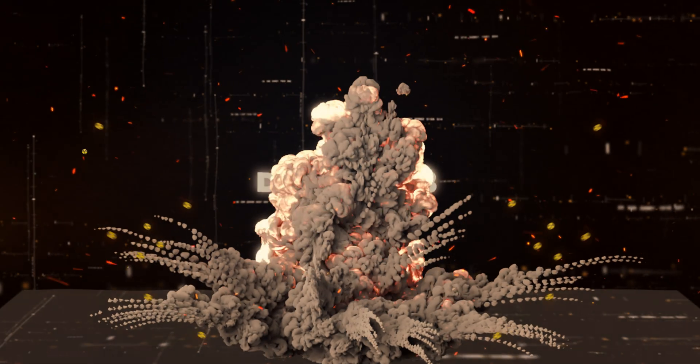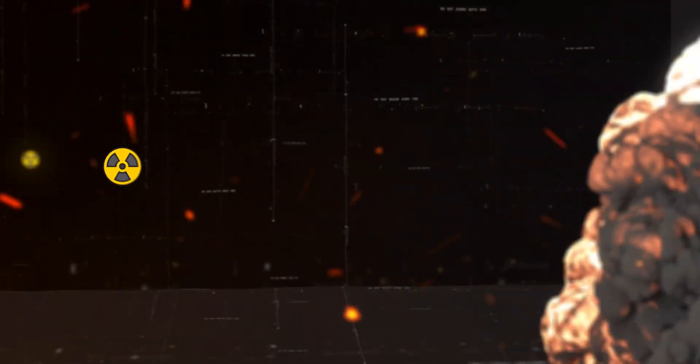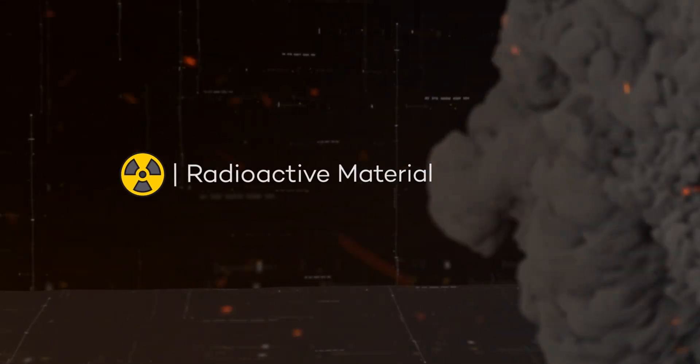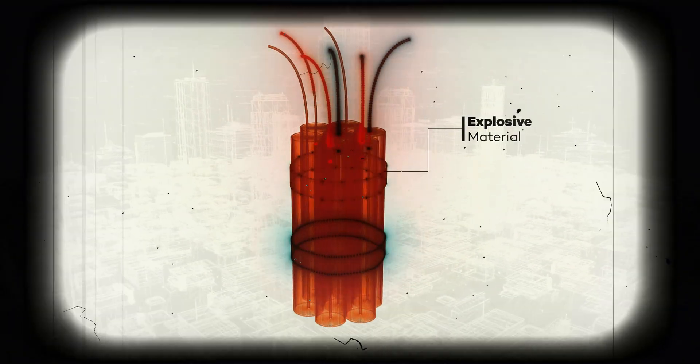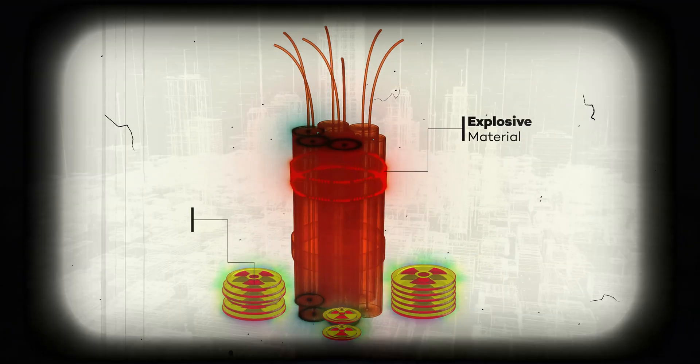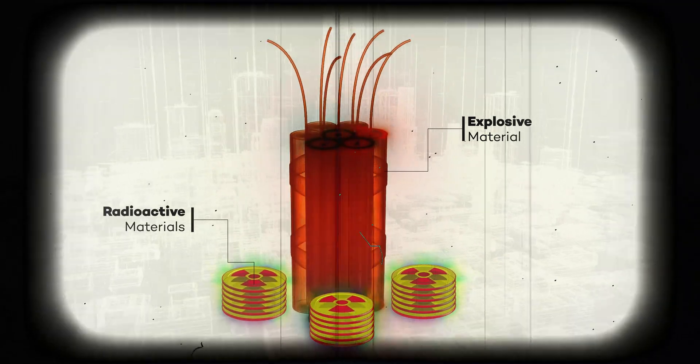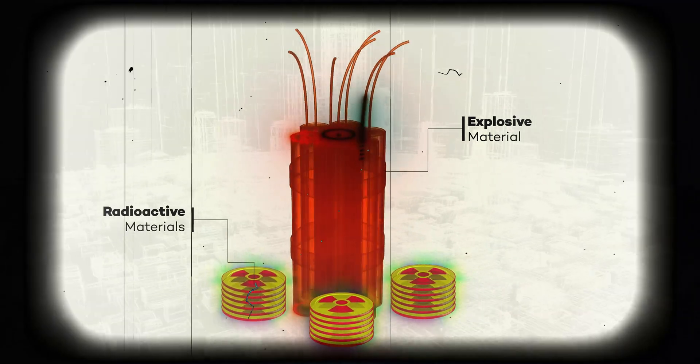A dirty bomb is more made to disperse radioactive material around an area without that thermal blast. Most times, their construction consists of an explosive material, and on the outer surrounding part is going to be radioactive pellets or another irradiated type of material. The idea behind a dirty bomb is mass disruption, whereas a nuclear device is engineered to create mass destruction amongst the population.